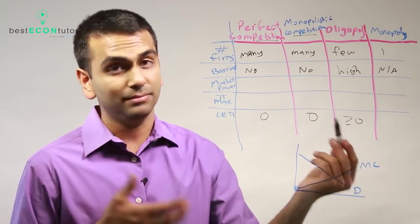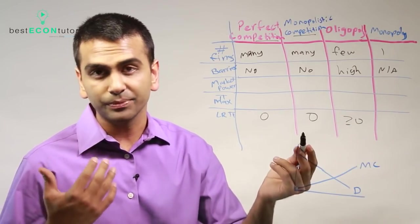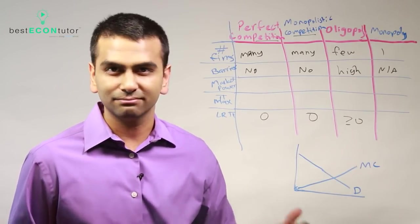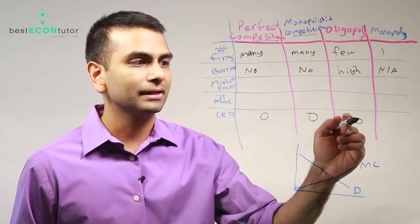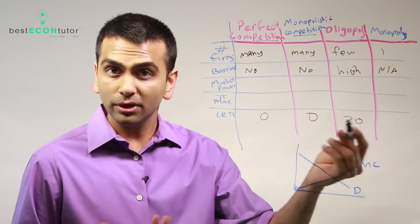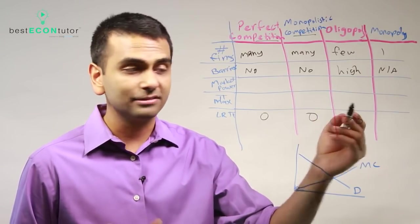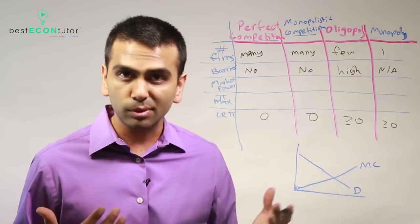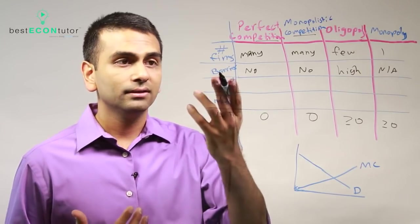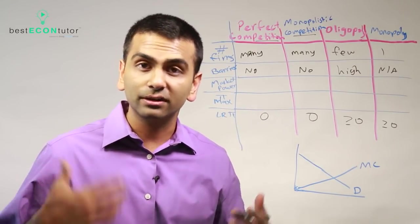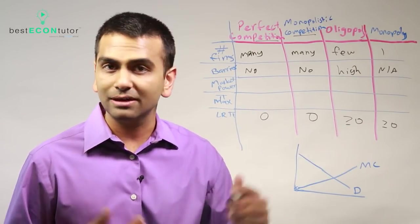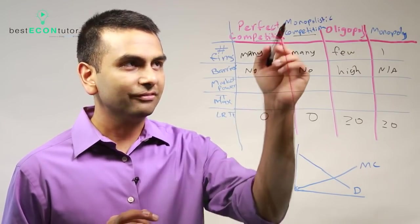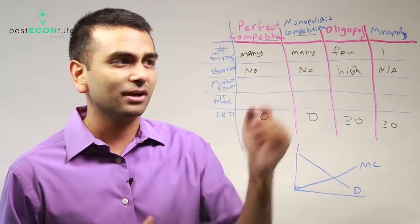Long-run profits would never be negative for oligopolies or monopolies because you can always exit. But you could actually have positive long-run profits because, if you have a profit, nobody is necessarily going to enter and price-compete to lower your price. Now, the main difference — looking at these first two columns, they've been identical so far — is that monopolistically competitive firms have some market power, whereas perfectly competitive firms do not.